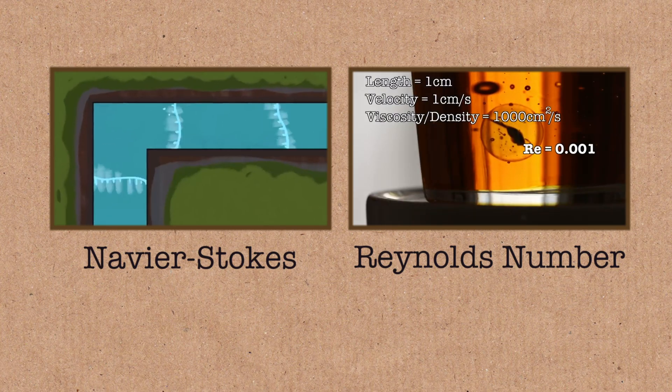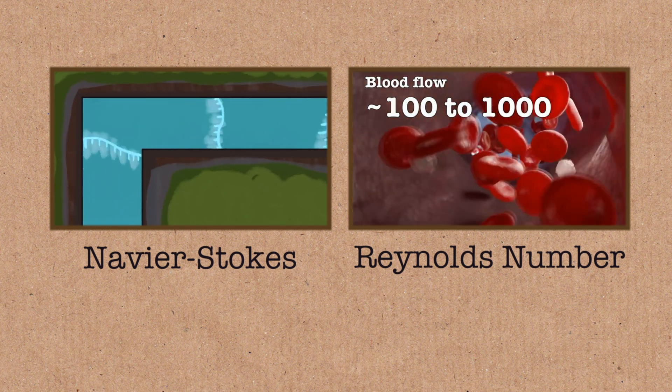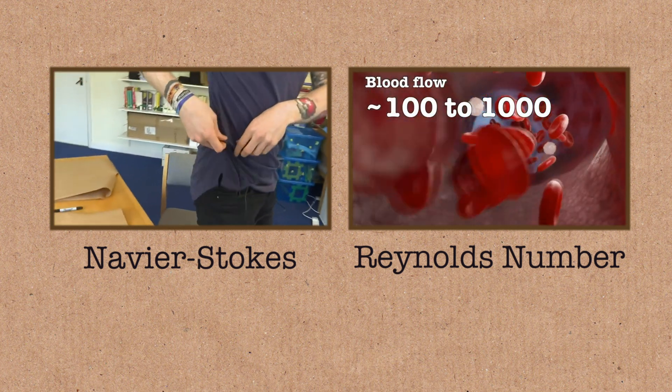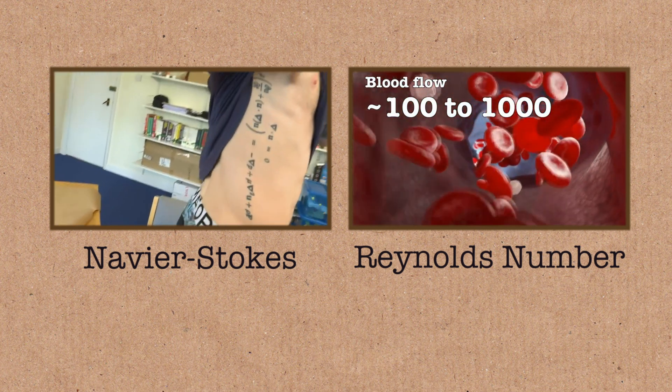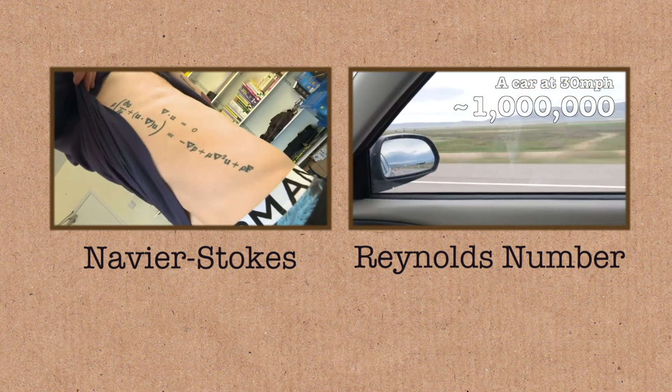This video was the third in a kind of trilogy about Navier-Stokes equations. To see the other two, there are links on the screen and in the video description. The full Navier-Stokes equations as written down on our piece of paper. Hang on, which way around are we? We're talking this, yeah.